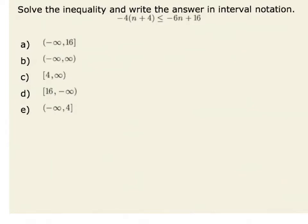In this problem, I'm asked to solve the inequality and then write the answer in interval notation. Let's look at this inequality. We have negative 4 times a quantity of n plus 4, and that's less than or equal to negative 6n plus 16.